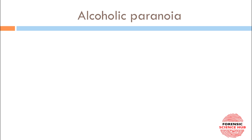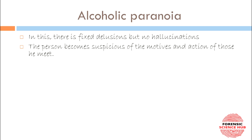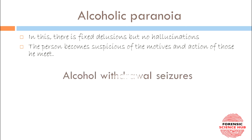Alcoholic paranoia involves fixed delusions but no hallucination. The person becomes suspicious of the motives and actions of people around them, which can include friends or family — the person starts being suspicious of them.